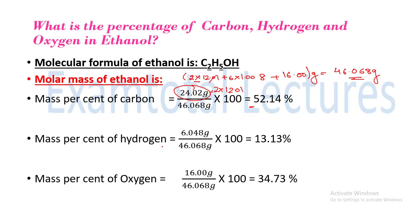Then we have mass percent of hydrogen, which is 6.048 grams divided by 46.068, into 100, which is 13.13%. Then mass percent of oxygen: there is only one oxygen, so it is 16.00 grams divided by 46.068 grams, into 100, which comes out to be 34.73%. So in a pure ethanol compound, carbon is 52.14%, hydrogen is 13.13%, and oxygen is 34.73%.